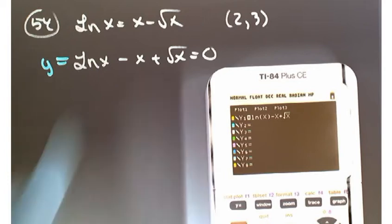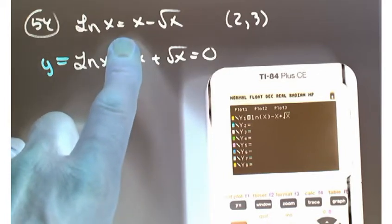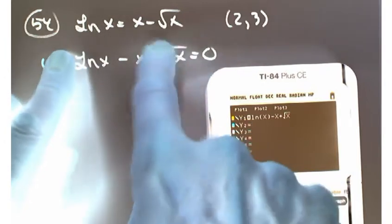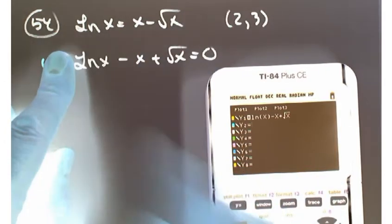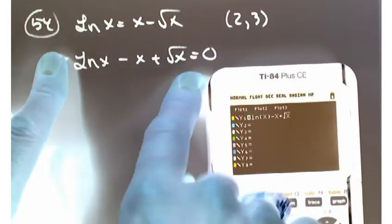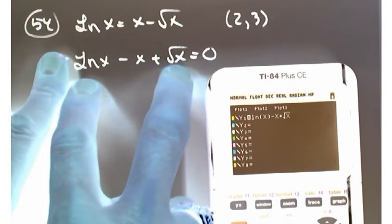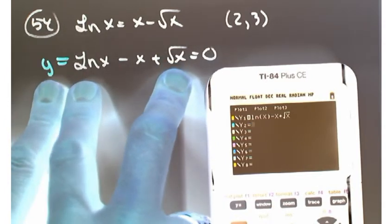So we're going to try and apply the intermediate value theorem to this problem right here. Now we'll start by moving everything to the left-hand side so that we have something equal to zero. And that expression here on the left-hand side, I'm going to let that equal to y.